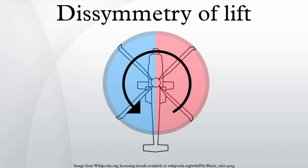Conversely, the retreating blade flaps down, develops a higher angle of attack, and generates more lift.